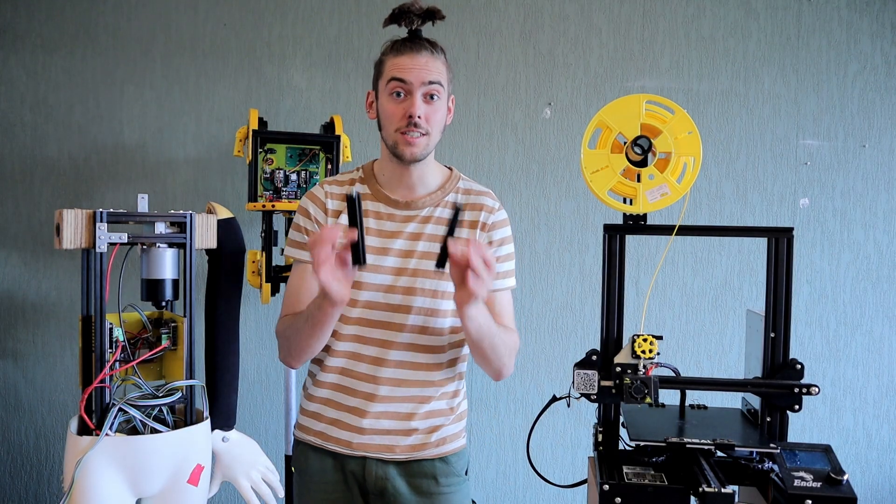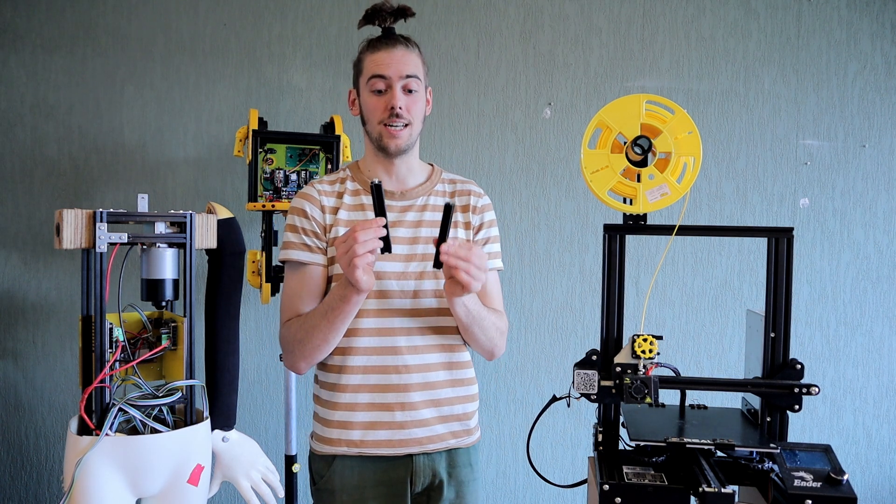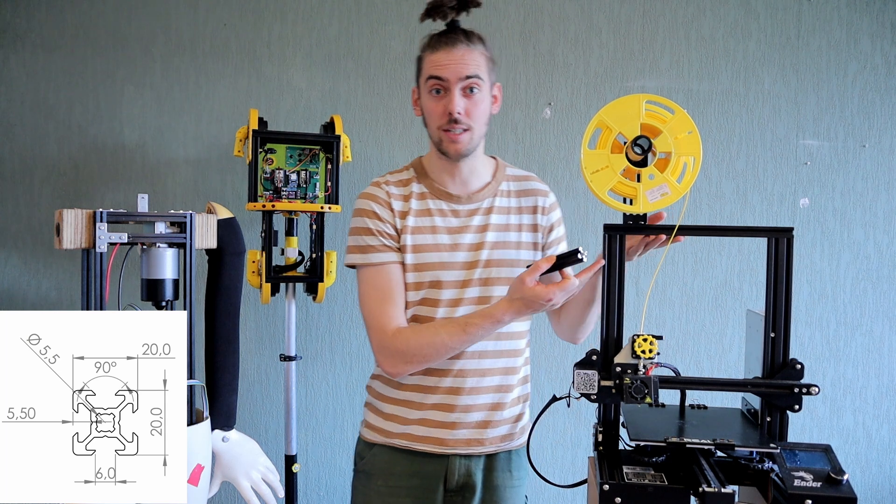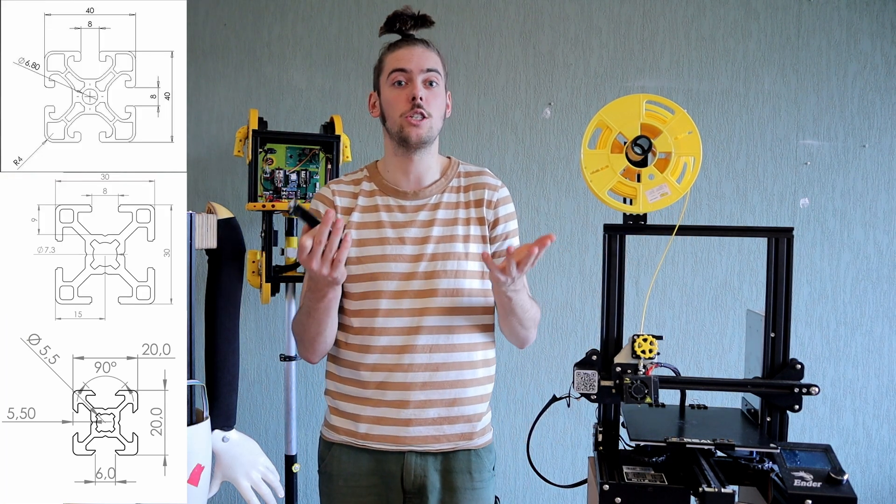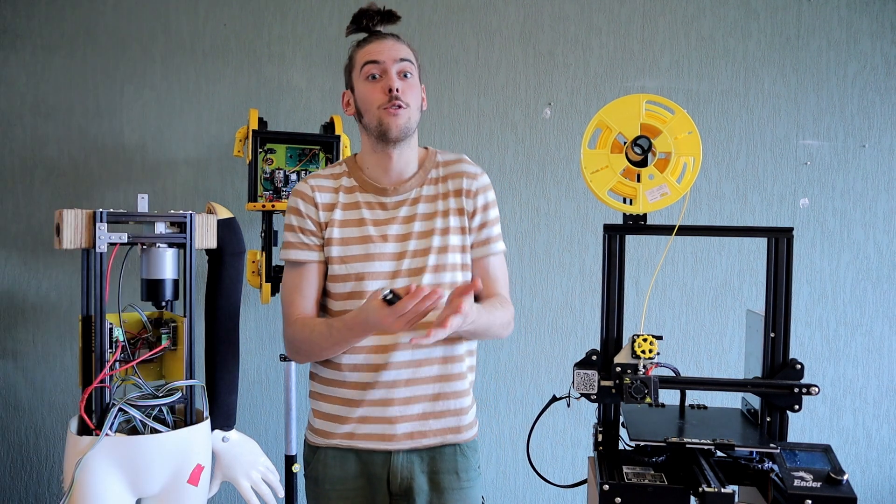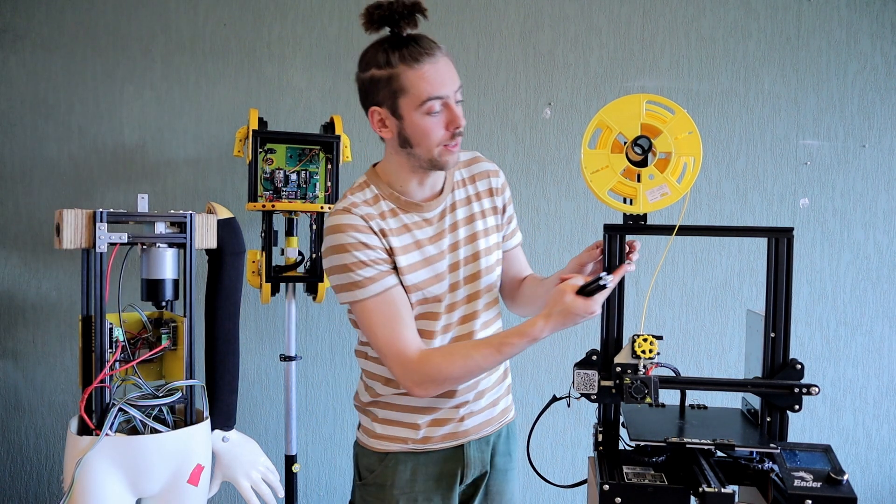When you start with the design, the first thing you need to decide is the profile size. 2020 is very common on small machines like a 3D printer, but there's also 30-30 and 40-40 which you might want to use if you're building something like a desk or something that carries a lot of weight, and for all these sizes there's also double profile width to consider.